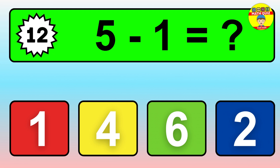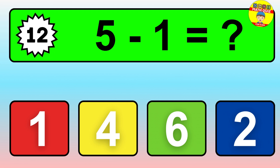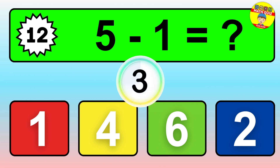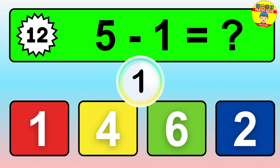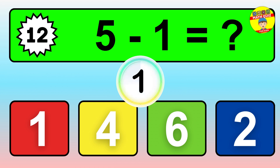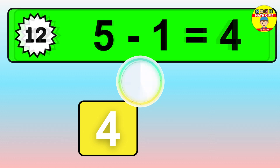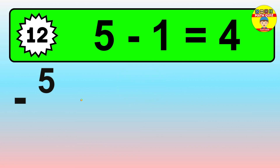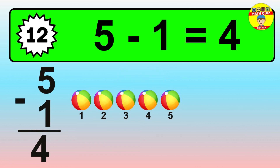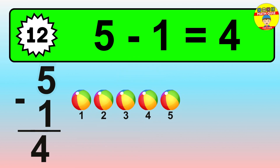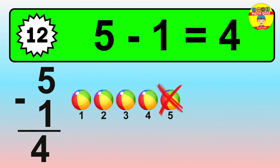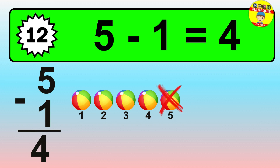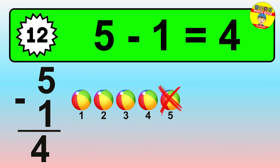Question twelve: five minus one equals what? So the answer is five minus one is four. Let's count it: one, two, three, four.